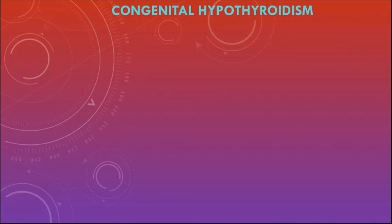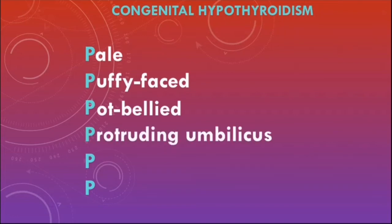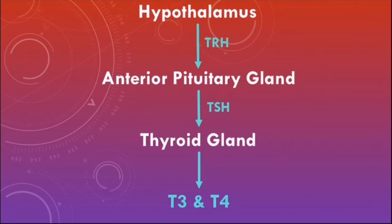Newborn screening is critically important even for asymptomatic babies. The symptoms of severe congenital hypothyroidism can be remembered with the six Ps: babies look pale with a puffy face, pot-bellied, with a protruding umbilicus from an umbilical hernia, a protuberant tongue, and poor brain development.